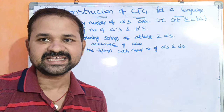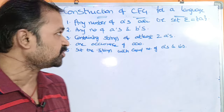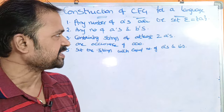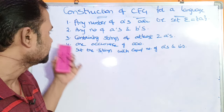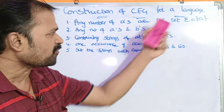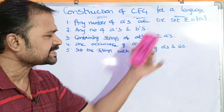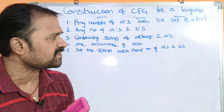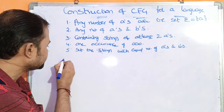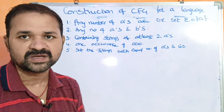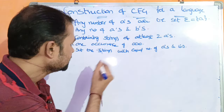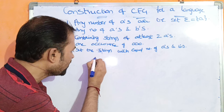Now let us see these five examples — construction of CFG for a language. The first example is any number of A's over the set sigma equal to A. Any number of A's over the set sigma is equal to A, so here sigma is given.